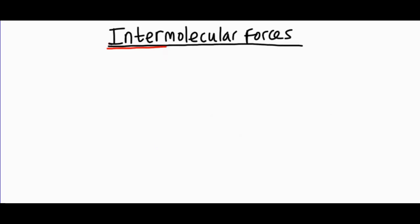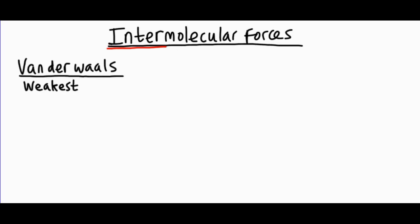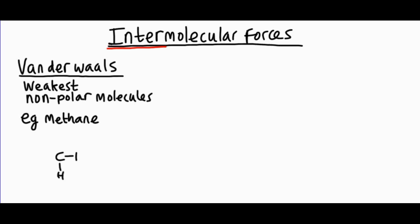Let's look at the three types of intermolecular forces. The first and weakest are called van der Waals forces — note that the W is pronounced as a V. Van der Waals forces are very weak. In the case of a non-polar molecule or atom, this would be the strongest intermolecular force at work. Van der Waals forces occur between any two atoms or molecules that have electron clouds — so basically everything at the molecular level is attracted by these forces.